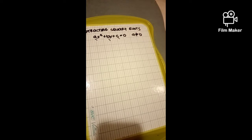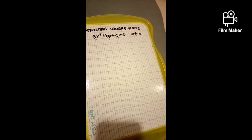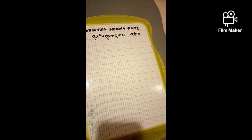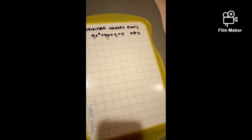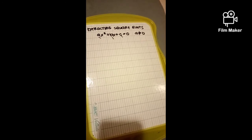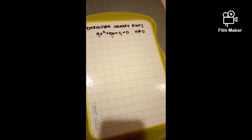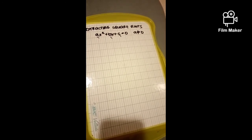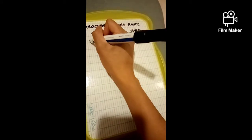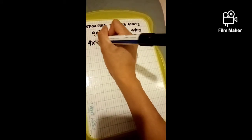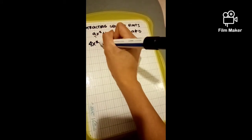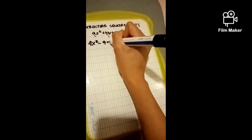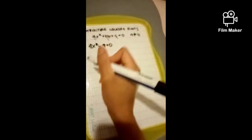If the quadratic expression factors, then we can solve the equation by factoring. For example, we can solve 4x squared minus 9 equals 0.